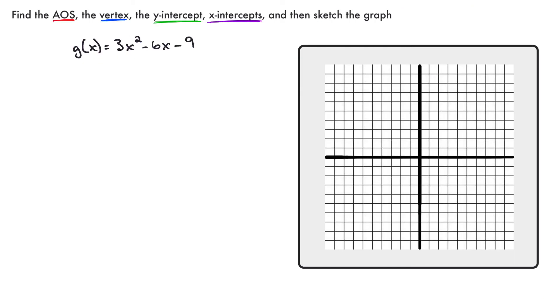The only difference between this problem and the last one, the last one I gave you the graph ahead of time, this one we're going to create the graph. So we're still going to find those four characteristics, those four traits. We are still going to plot them on an xy-axis. The only difference is at the very end we connect those with a line to create a parabola.